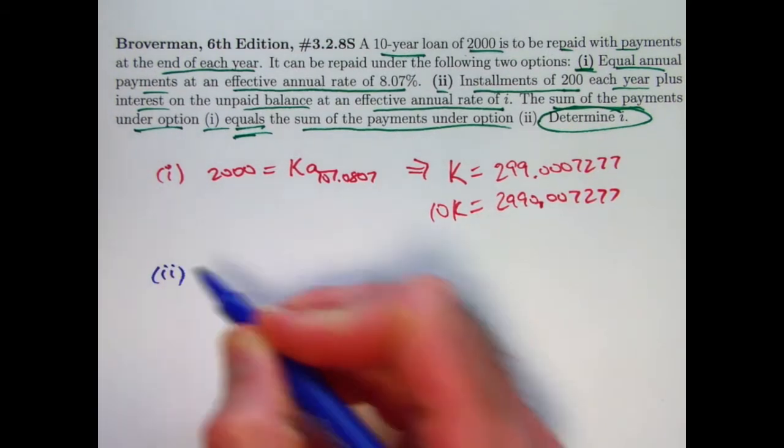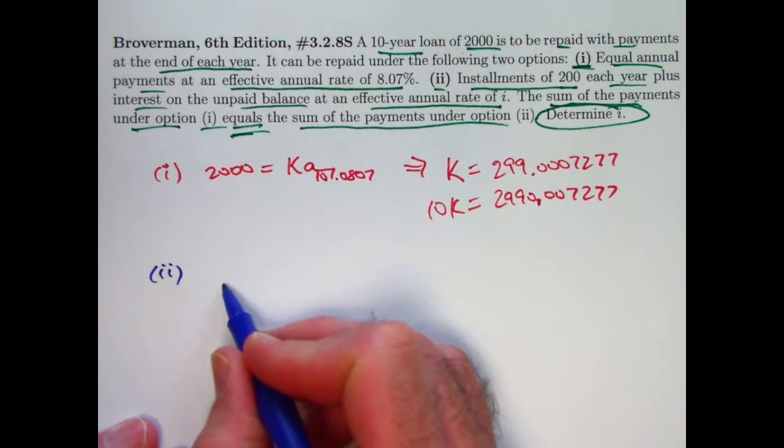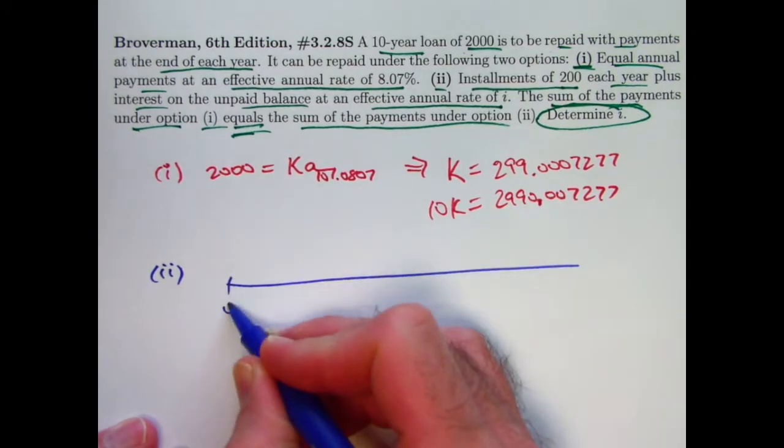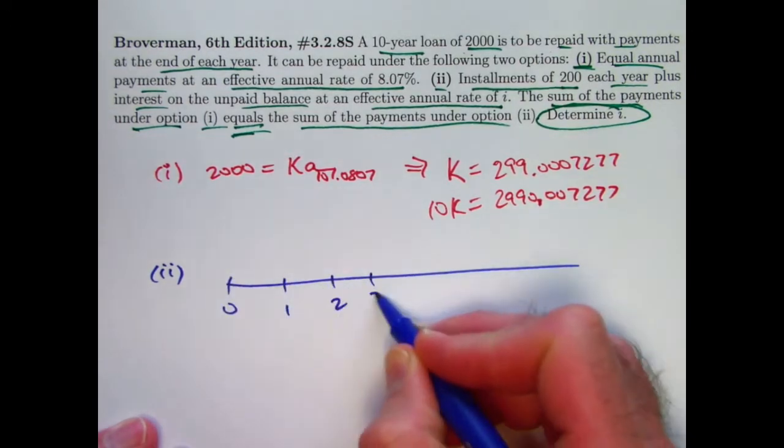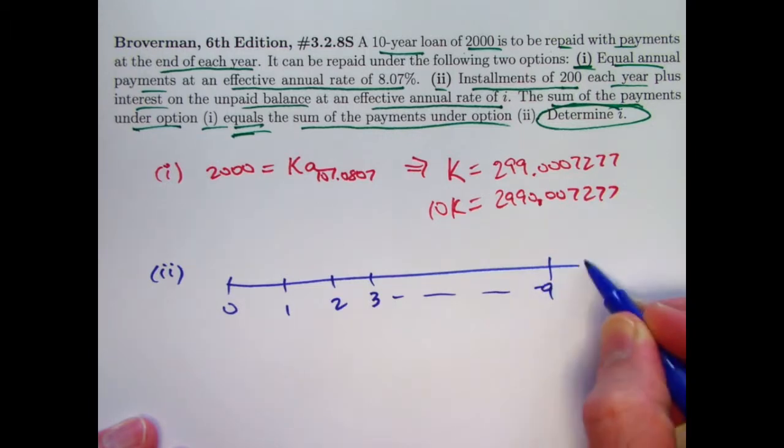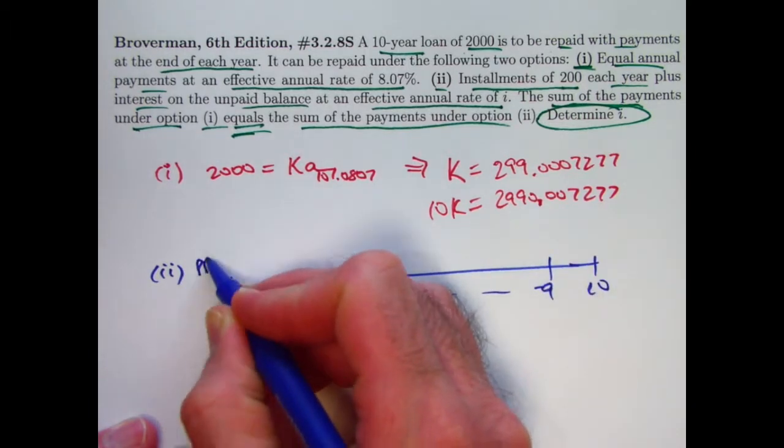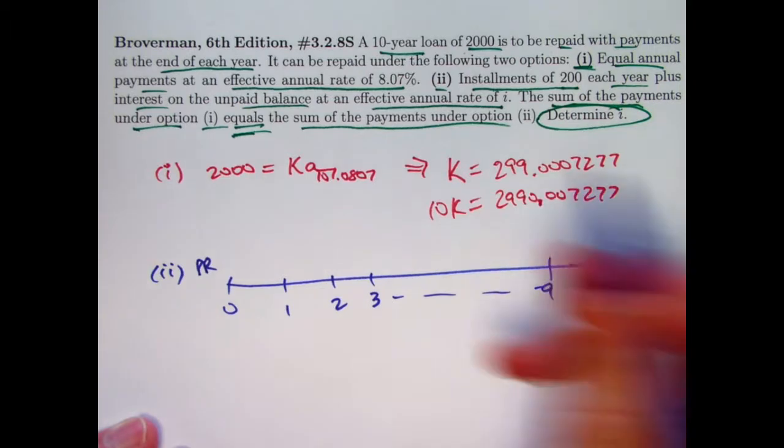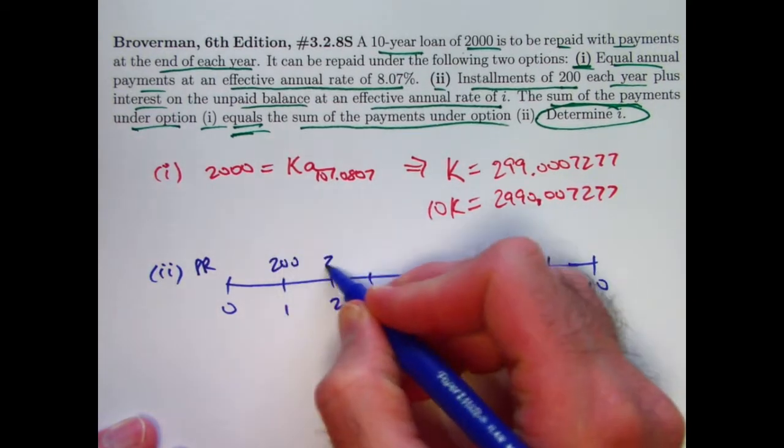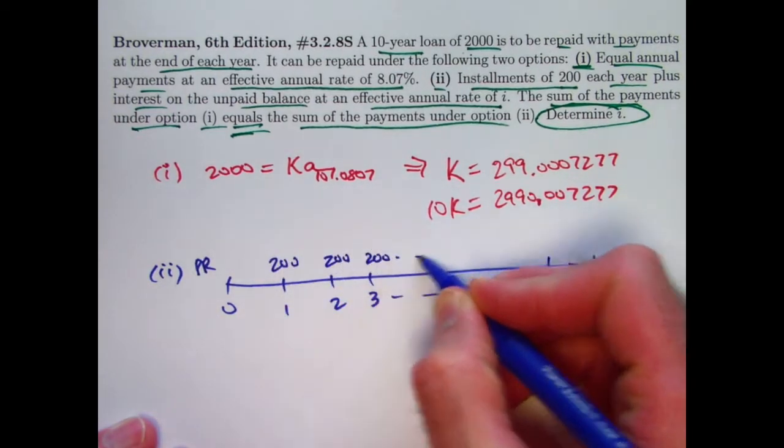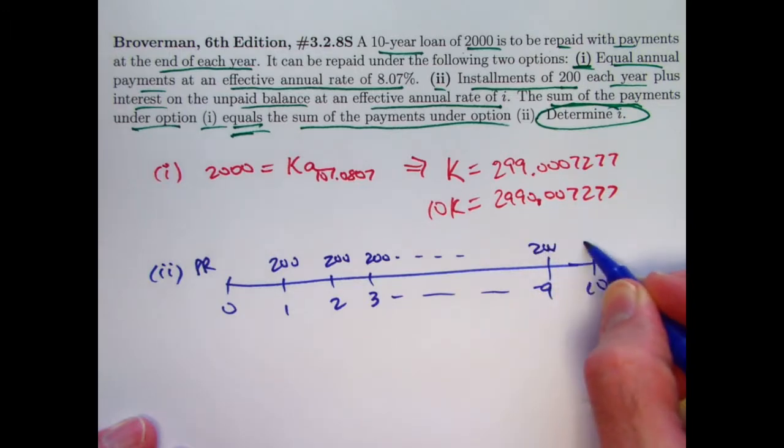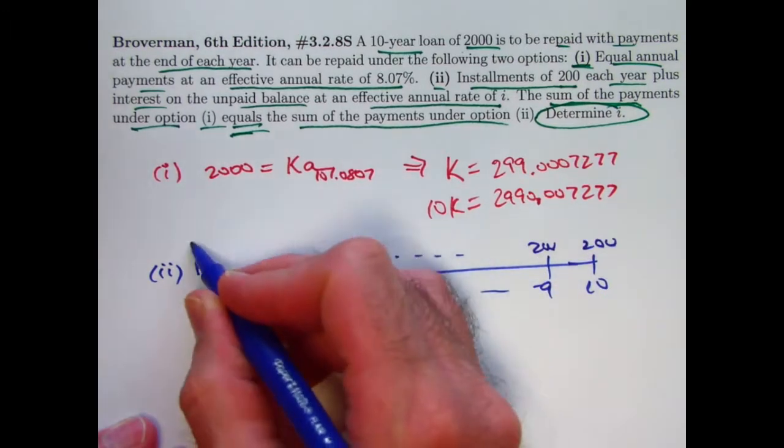So what about option 2? Maybe we want to think about a timeline here for this one. Your principal reduction portion of your payment is the same, 200 every year.